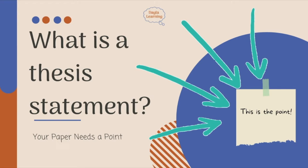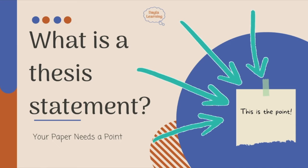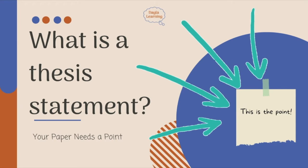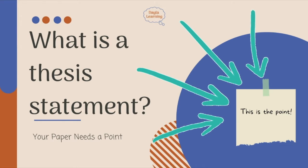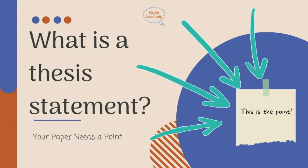The first thing you're going to want to check in your rough draft is that your paper has a main point. For most academic papers, that means you're going to be looking for a thesis statement. If you've written an informative essay, a research paper, an argumentative essay, a compare and contrast paper, or most other kinds of academic assignments, you're going to have a thesis statement.